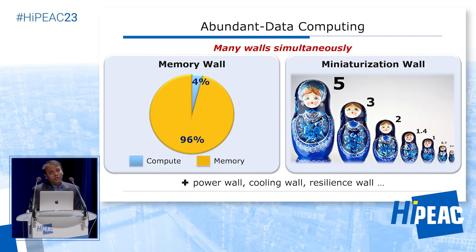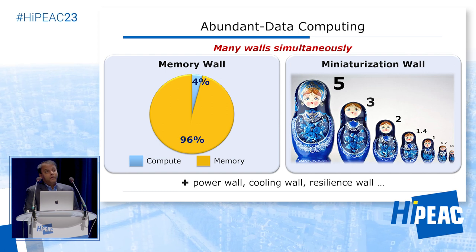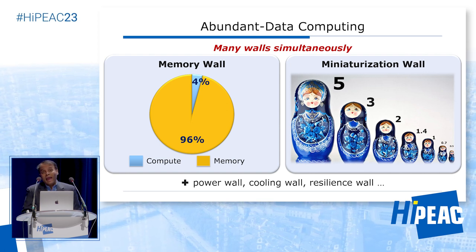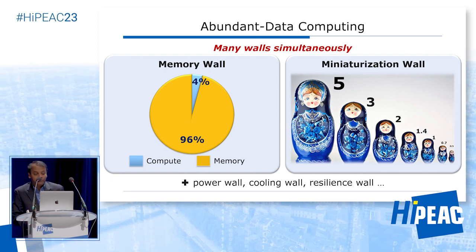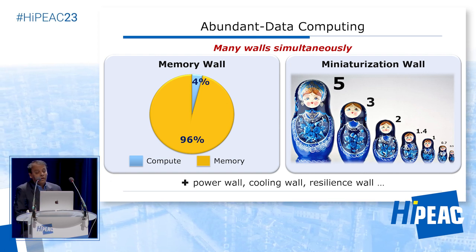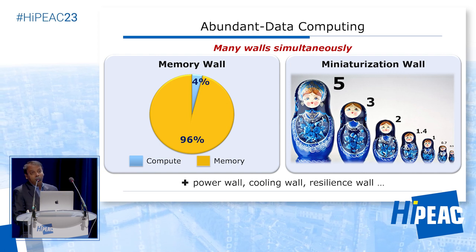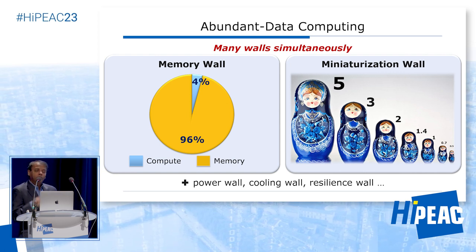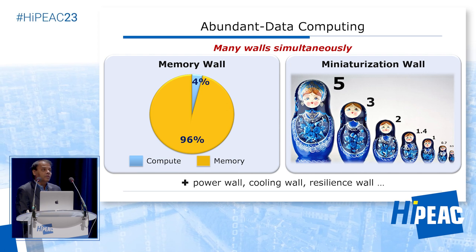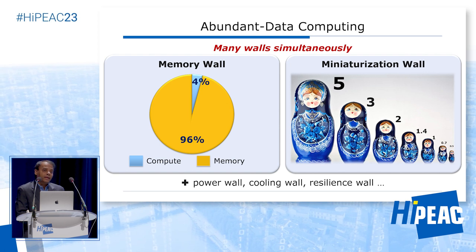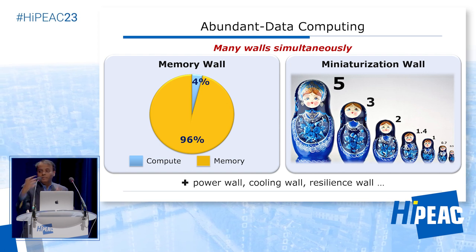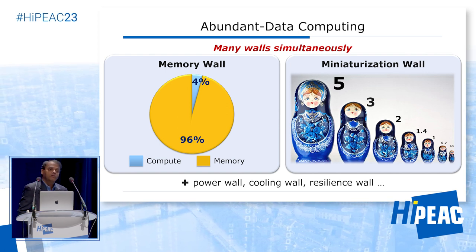Moving forward, we need another leap in integration because our conventional ways of doing things are stalling. First of all, we are hitting the memory wall, which means that for almost all computations we can think about, we spend most of the energy and execution time trying to shuttle data back and forth between the computing chip and the memory chip.